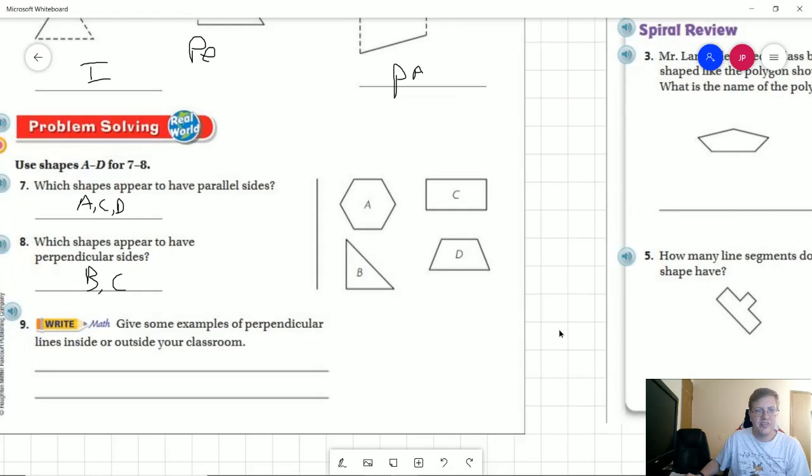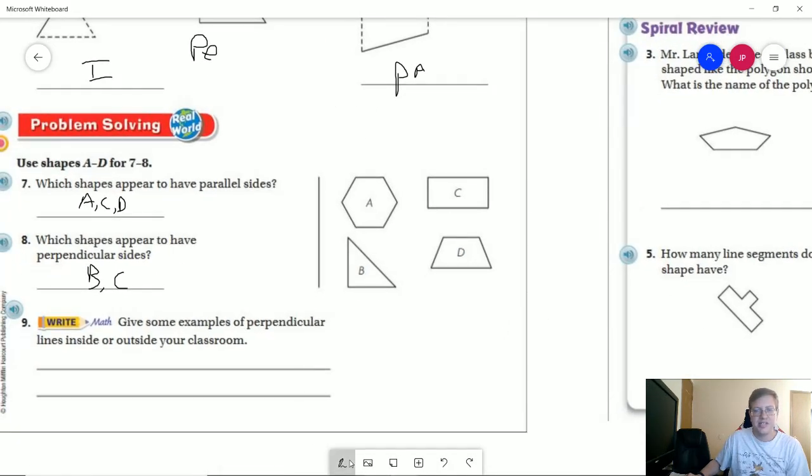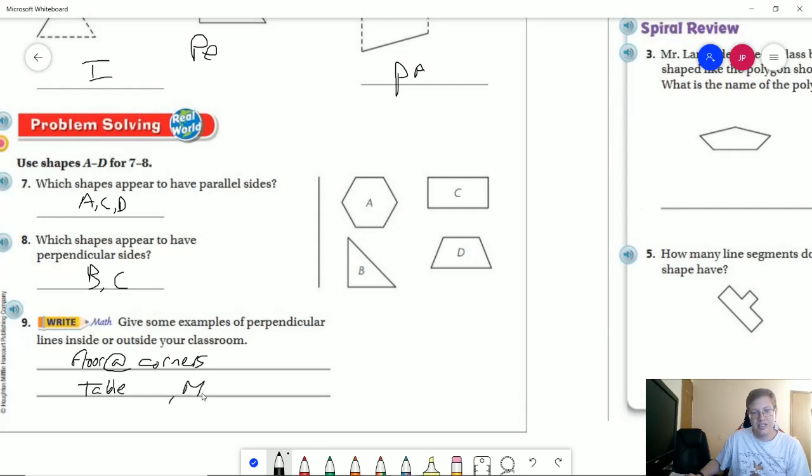Some examples of perpendicular lines inside or outside the classroom, we could use the floor at corners, square table or desk, and actually we could use our math book, because our math book would be rectangular if you look down at it from the top.